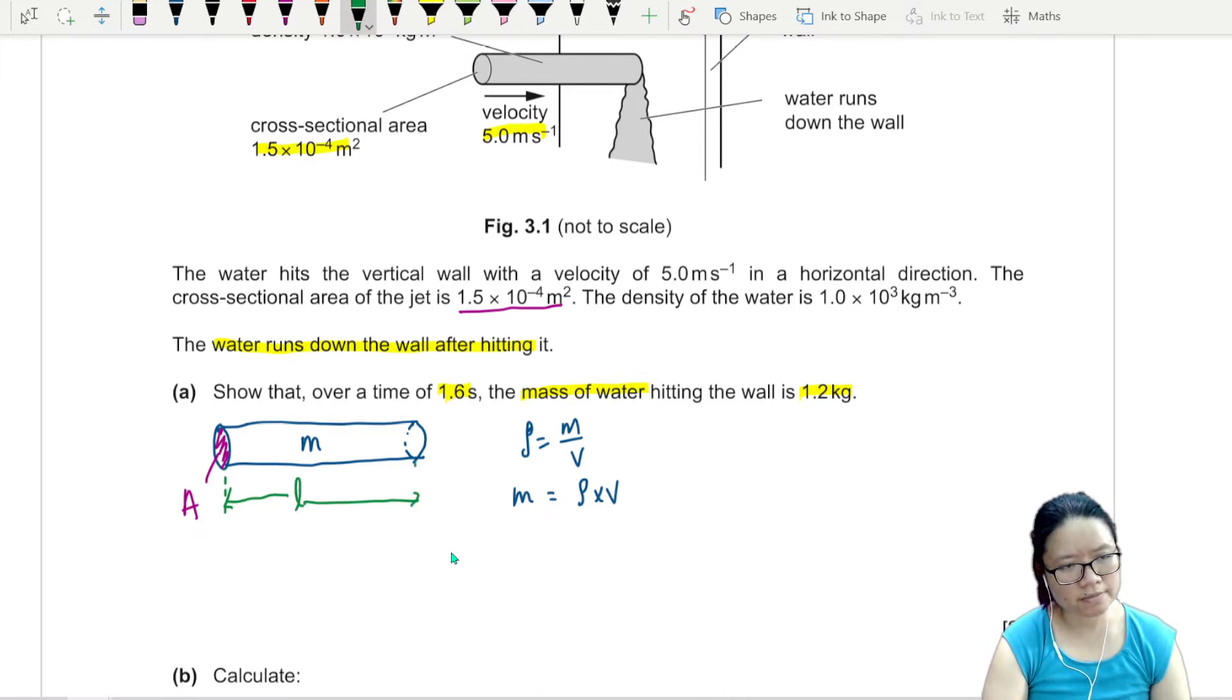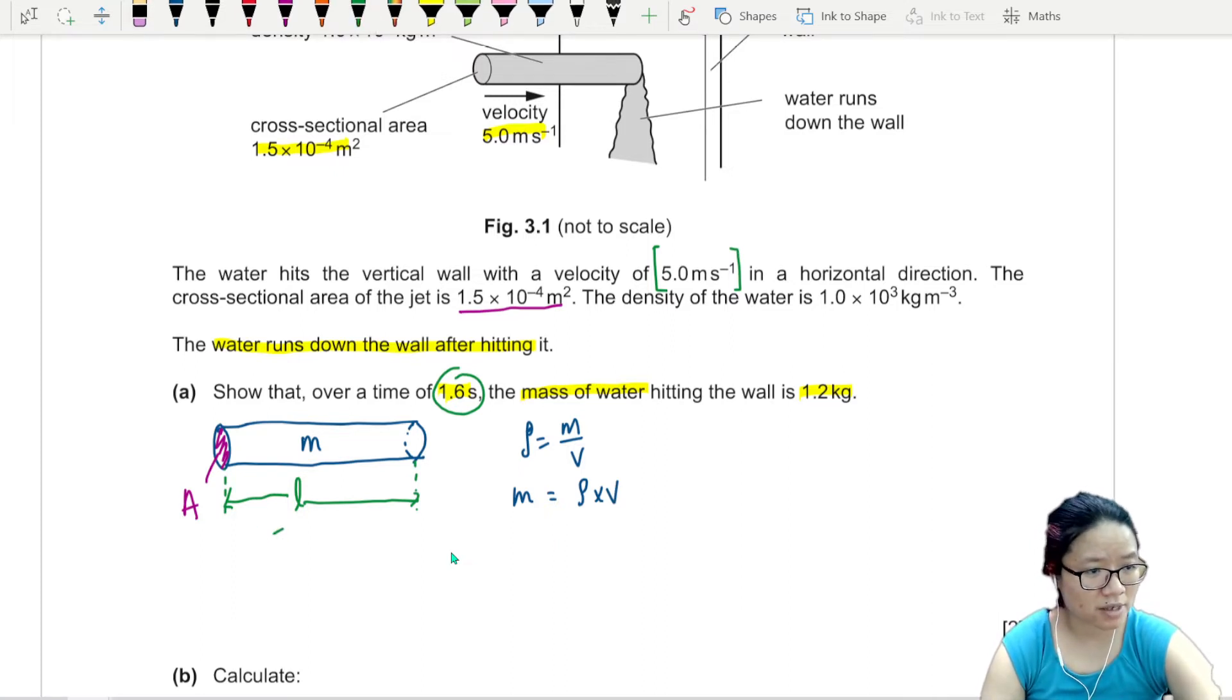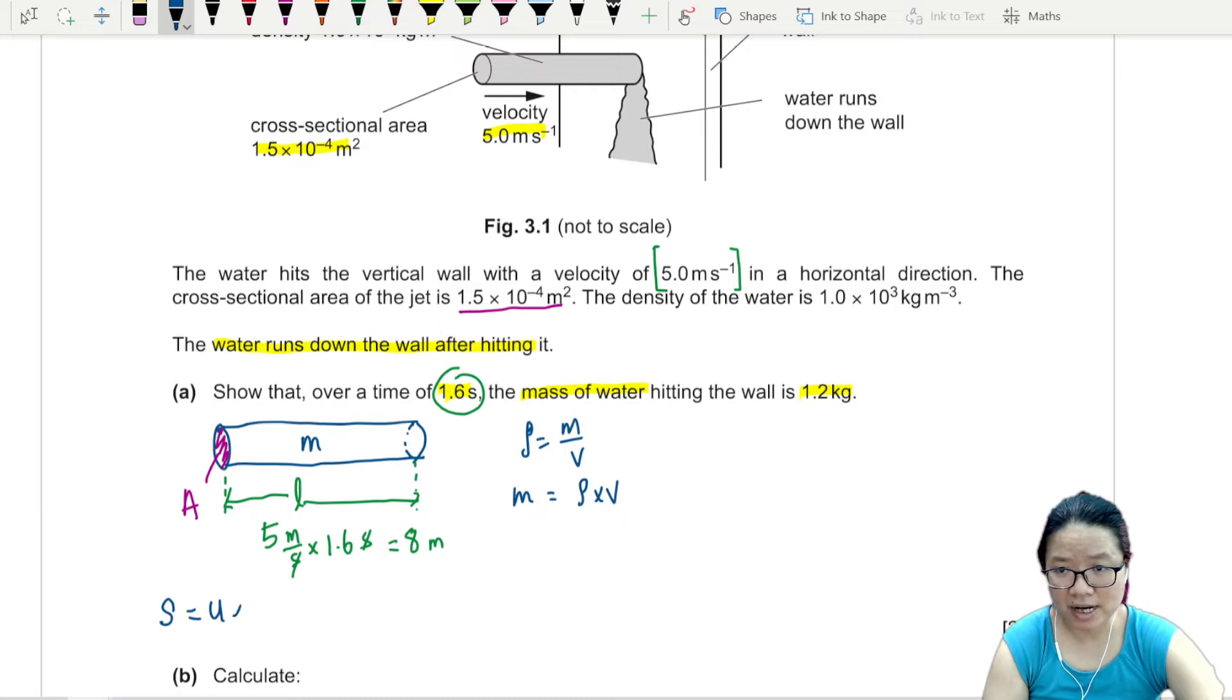L is from here to here. So this water travels 5 meter in one second. But now they have this strange timing which is 1.6 seconds. So 5 meter in one second, 1.6 seconds here will be 5 times 1.6. 5 meter per second multiplied by 1.6 seconds. And so they cancel off. I believe this one will give you 8 meter. So the length is 8 meter. Or you can use your good old distance is velocity times time. S is ut plus half at squared but a is 0. So the u here is 5 and the t is 1.6. Regardless, length is 8 meter.